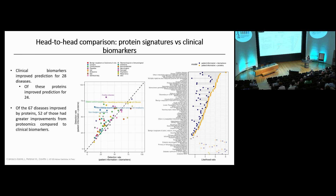At the bottom of the figure are diseases for which clinical biomarkers actually perform better than protein signatures — these are positive controls because we include diagnostic tests in the biomarker signatures. For example, diabetes uses glucose and HbA1c as diagnostic tests; gout uses uric acid. But for the vast majority of other diseases, the protein models outperformed the clinical biomarkers.